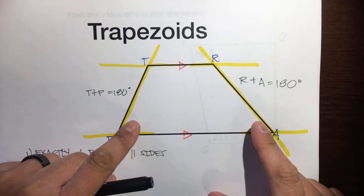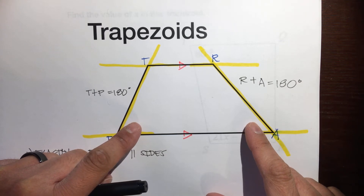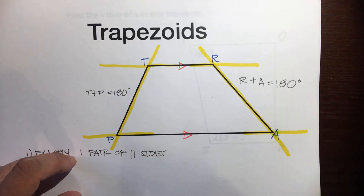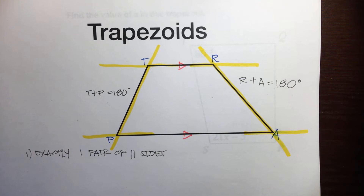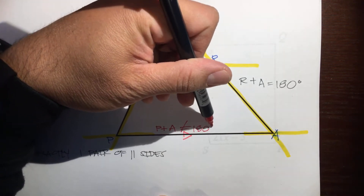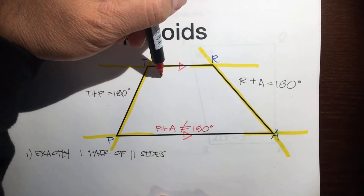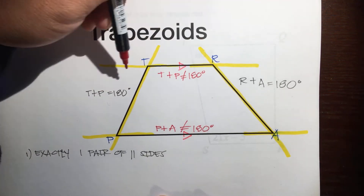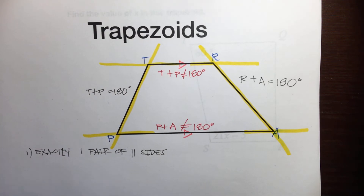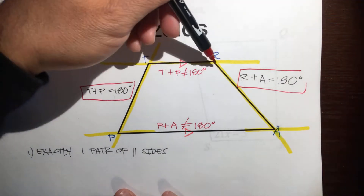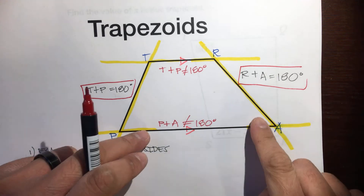However, look at P and A. Those are consecutive interior angles, but are they supplementary? Do they add up to 180 degrees? No, because these lines are not parallel. So, P plus A does not add up to 180 degrees because these lines are not parallel. And same thing — T plus R does not add up to 180 degrees because these lines are not parallel. Only these consecutive interior angles add up to 180; these two do not.